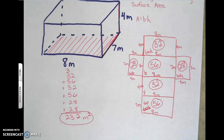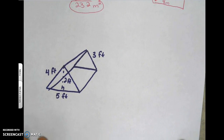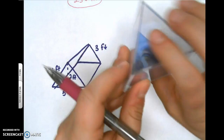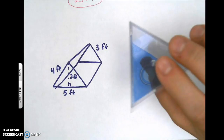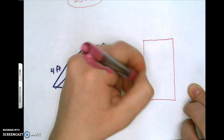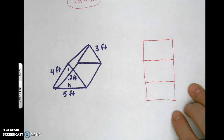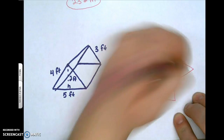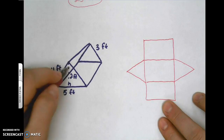Now moving to a triangular prism, it works very similarly. With a triangular prism, we identify all the shapes: two triangles and three rectangles. The three rectangles go through the middle — just like the rectangular prism, but now we only need three rectangles, not four. We also need to draw one triangle on each side of those rectangles.